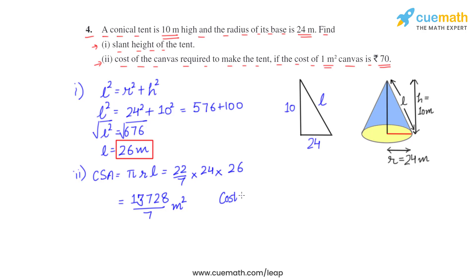And now let's work for the cost. So cost of one square meter canvas is rupees 70 and we have to find the cost of 13,728 by 7 square meters of canvas. So we will multiply the cost of one square meter canvas, that is 70, by the total area, that is 13,728 by 7, and this comes out to be rupees 1 lakh 37,280. So this is the total cost of the canvas required to make the tent.